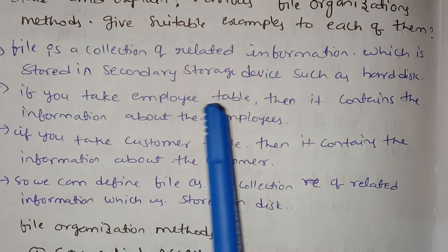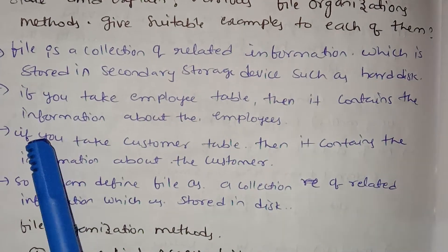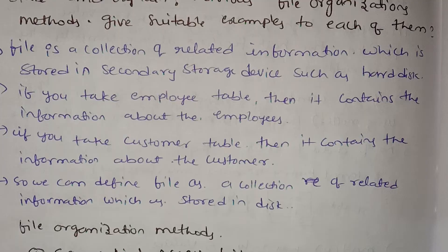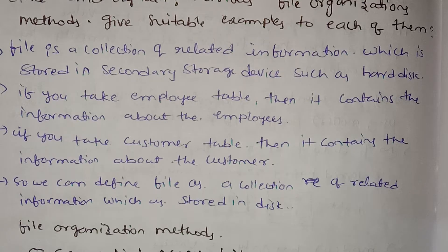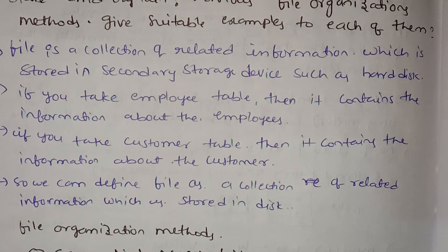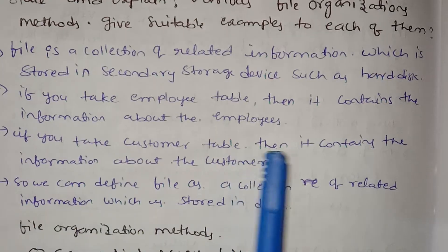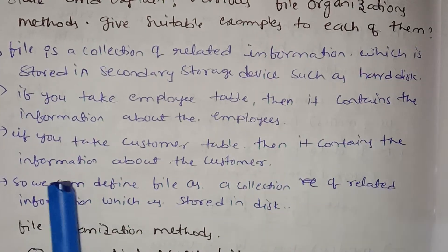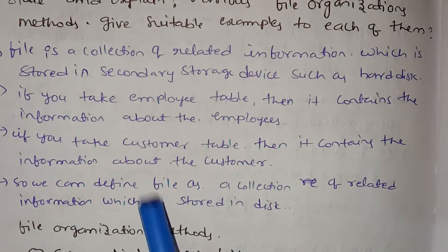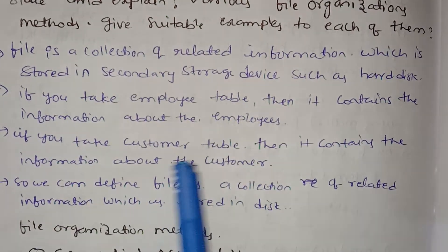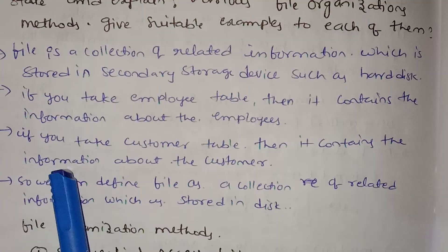If you take an employee table, it contains information about employees. You can store those employee details in secondary memory. Similarly, if you take a customer table, it contains information about customers — customer information.